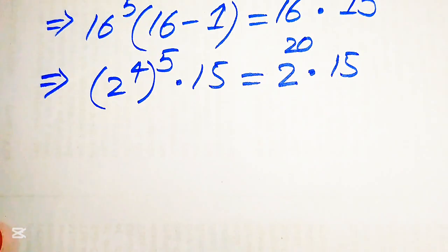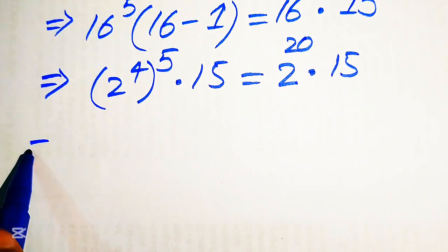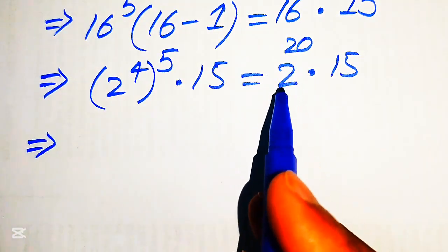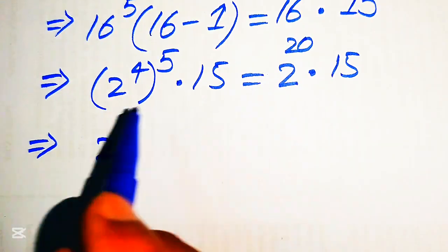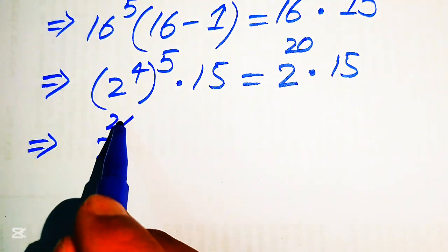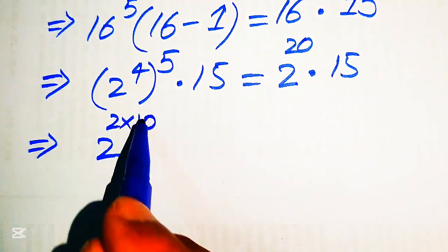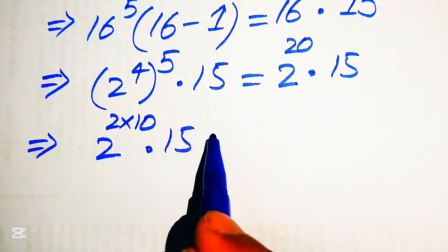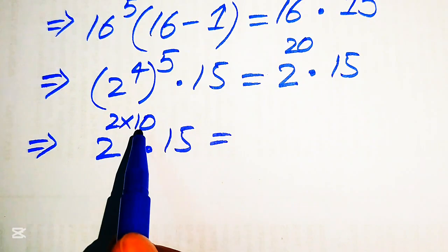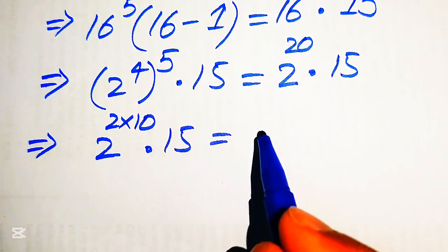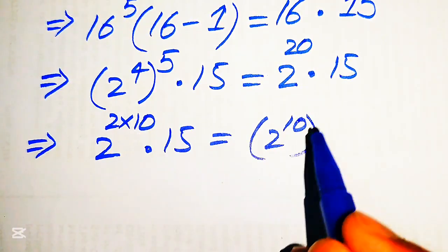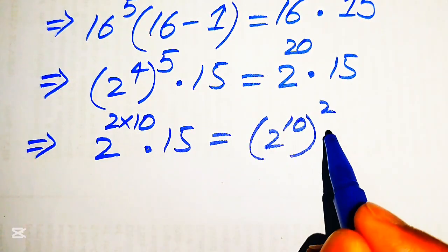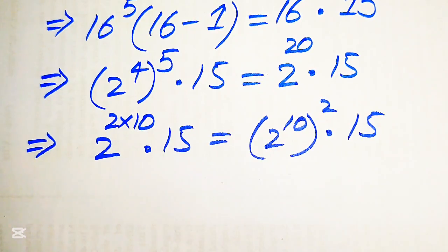In the next step our target is to find the value of 2 to the power of 10. We rewrite 2 to the power of 20 as 2 to the power of 2 multiplied by 10, multiplied by 15. Moving the 10 inside the term, it will be written as 2 to the power of 10, whole squared, multiplied by 15.